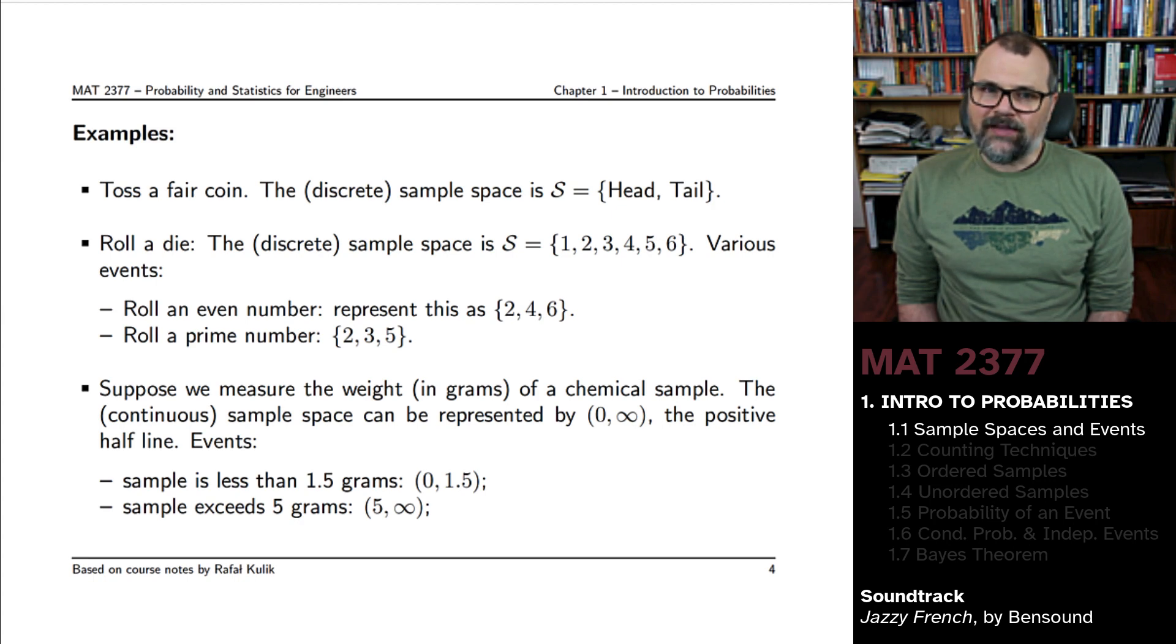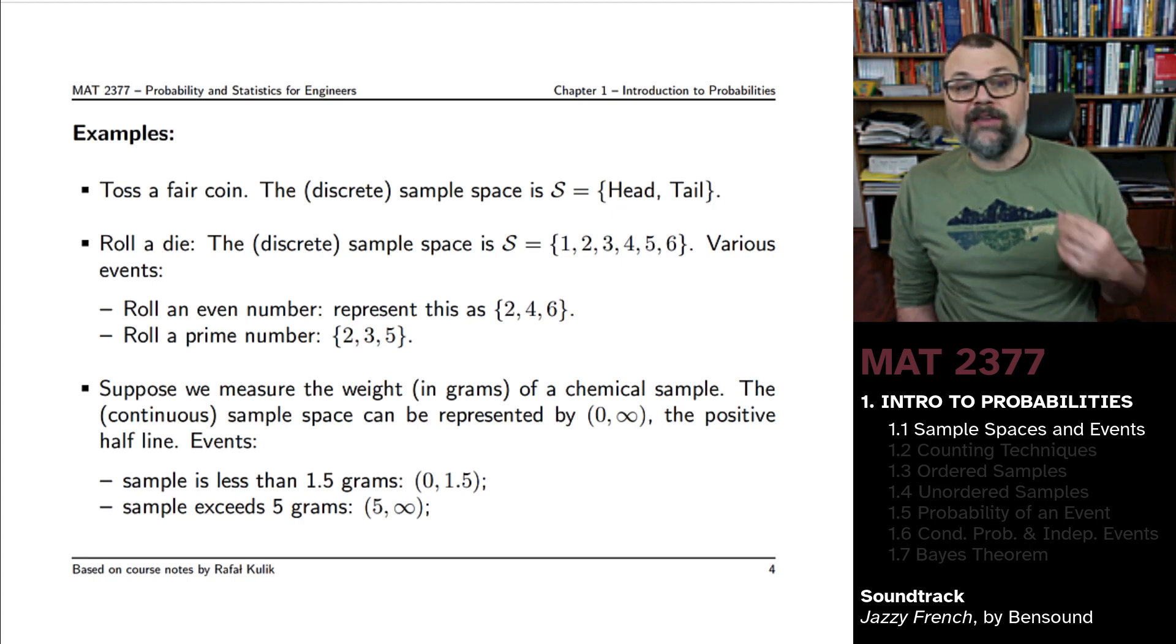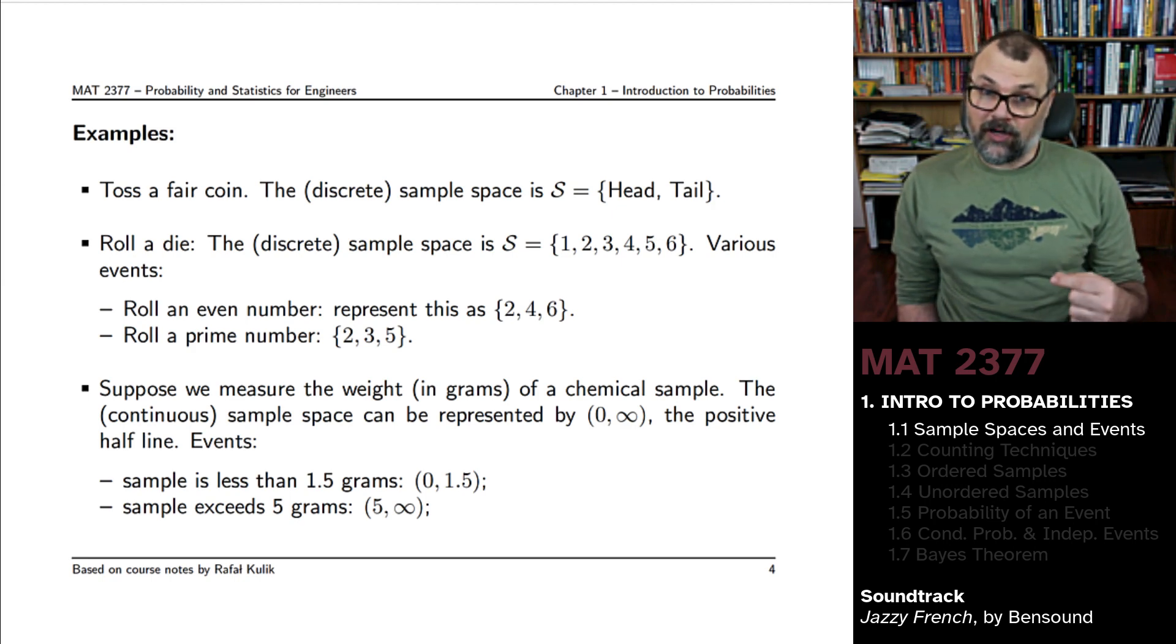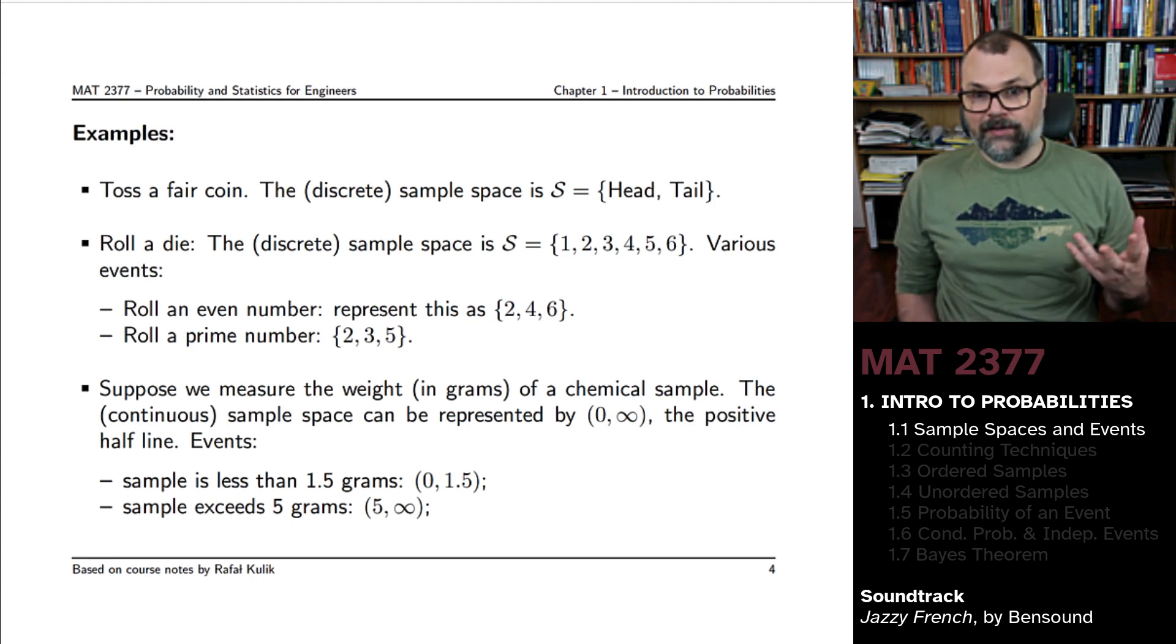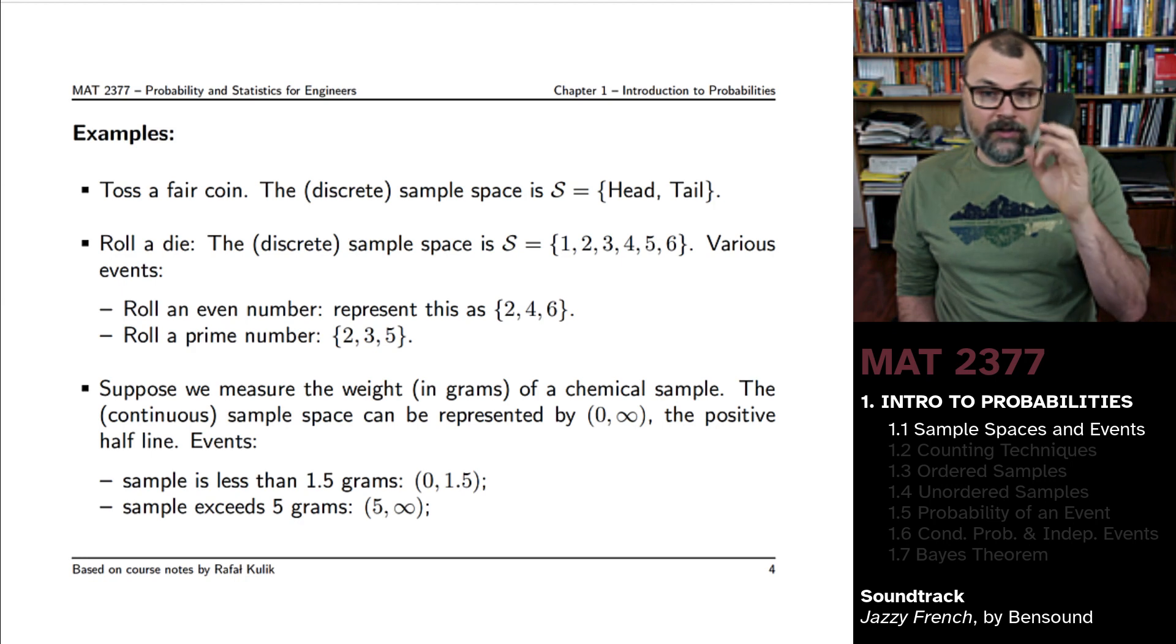Here's examples of events. You might be looking for the event where you roll an even number. And this would be a collection of outcomes - all the outcomes that are even: two, four, and six. So your event here contains three outcomes.